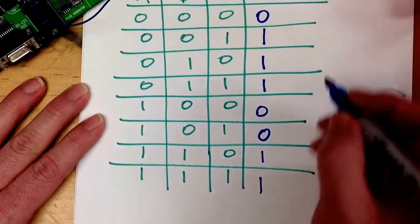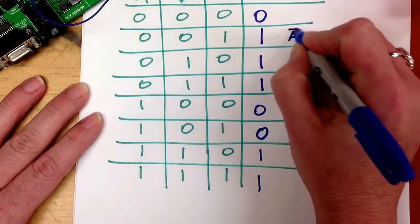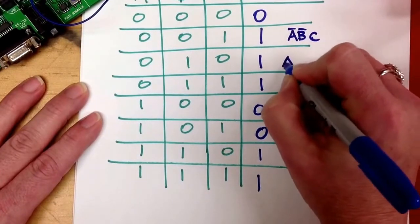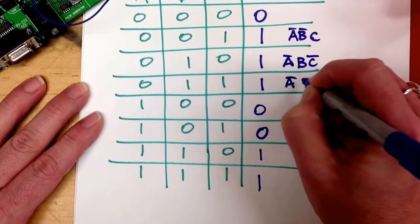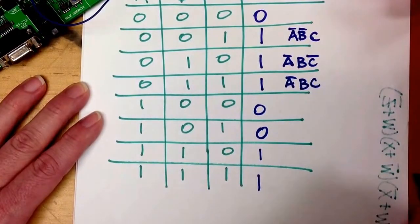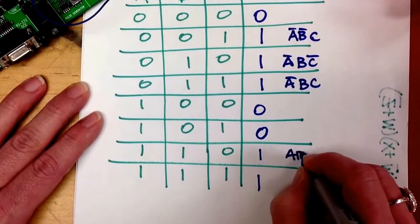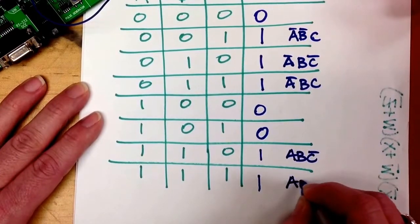So this term would be not A, not B, C. This would be not A, B, not C. This would be not A, B, C. This one would be A, B, not C, and A, B, C.